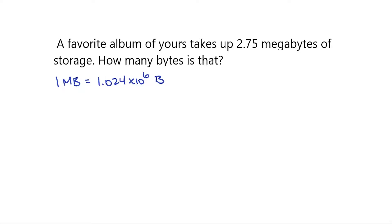So now let's set up some fractions to help us solve this problem. So for every 1 megabyte, I have my 1.024 times 10 to the 6 bytes, or I could say that for every 1.024 times 10 to the 6 bytes, I have my 1 megabyte.